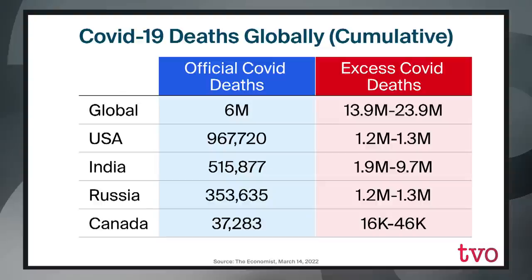Excess deaths in the US: between 1.2 and 1.3 million. In India, a significant difference — roughly half a million official deaths, but anywhere from nearly 2 million to nearly 10 million excess COVID deaths. In Russia, more than 350,000 official COVID deaths, more than a million excess COVID deaths. And in Canada, the numbers are fairly more synchronous: more than 37,000 COVID deaths officially, but excess COVID deaths anywhere from 16,000 to 46,000.